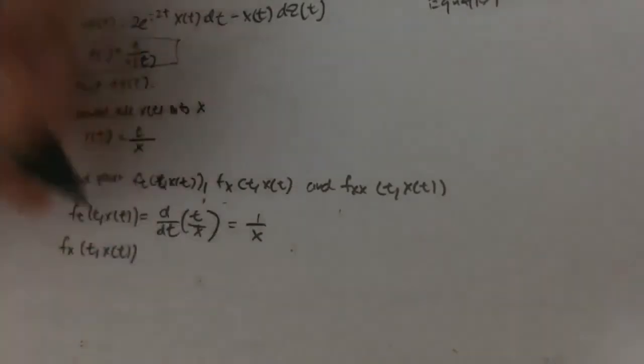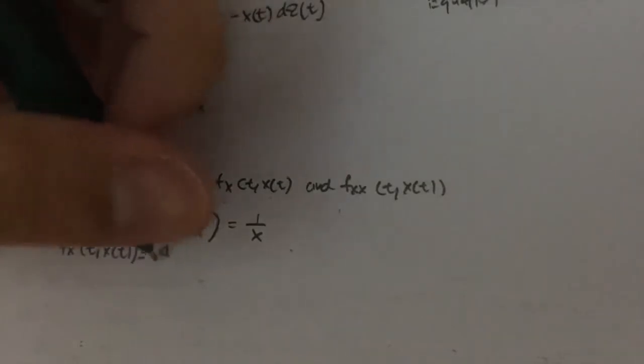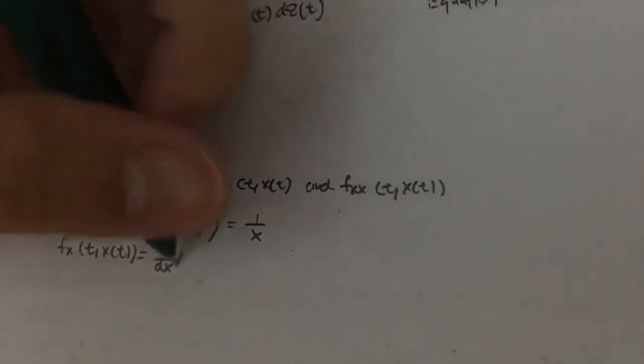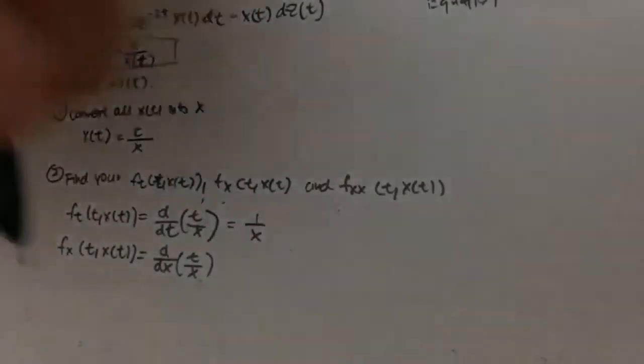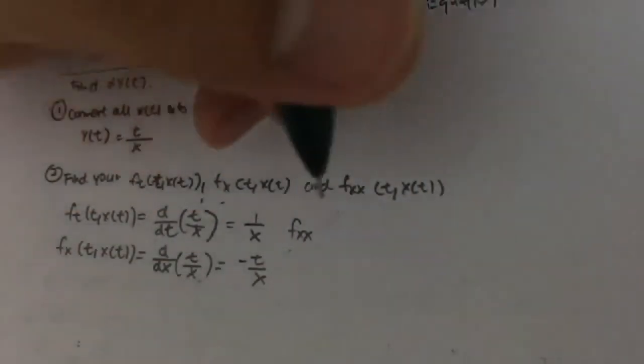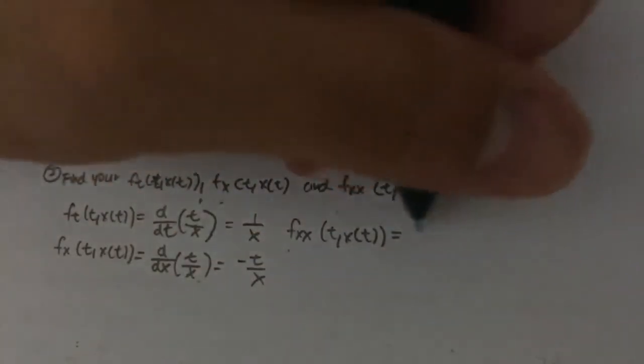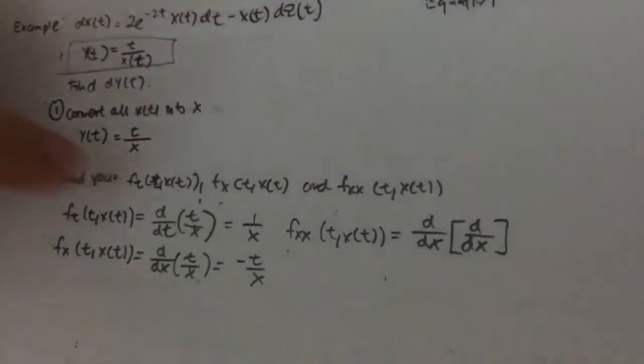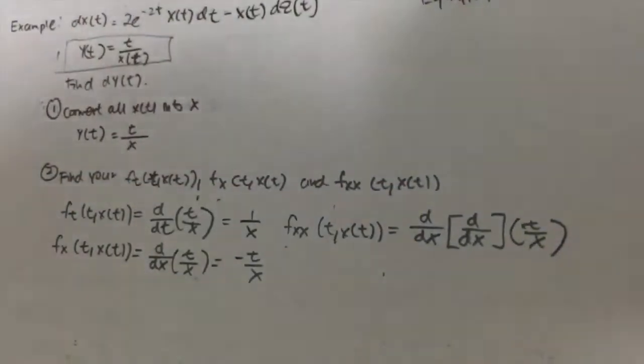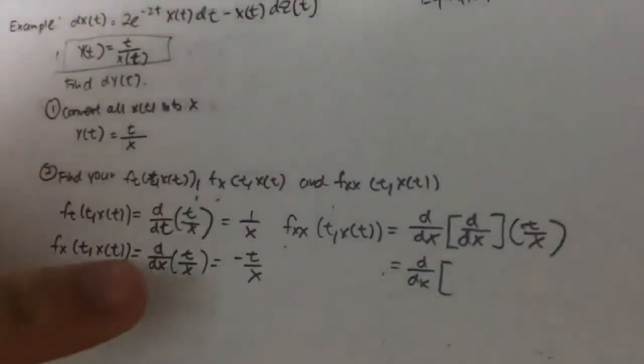fx(xt) means you differentiate with respect to x of the function t over x, which gives you negative t over x squared. And fxx(xt) means you differentiate twice with respect to x of t over x. Since the first derivative gives negative t over x squared, differentiating again gives you 2t over x cubed.